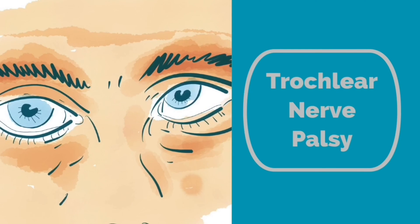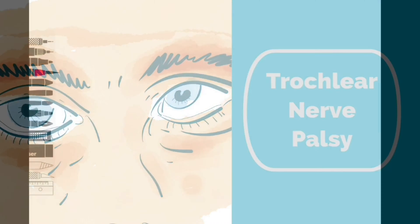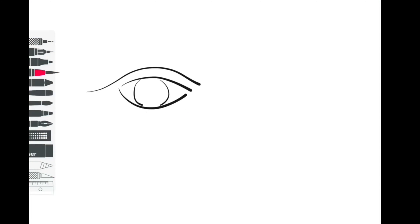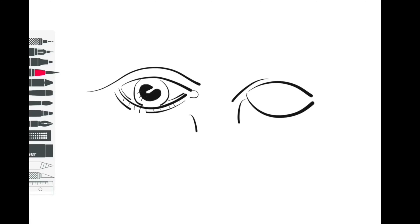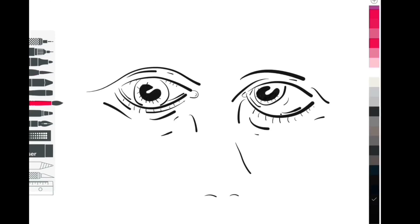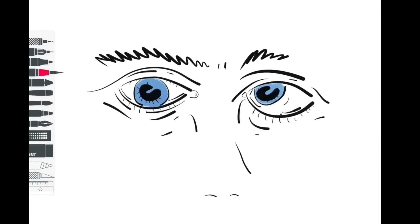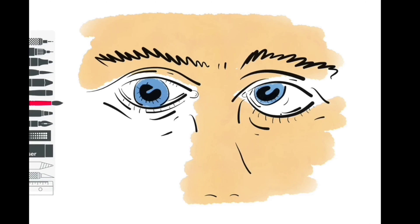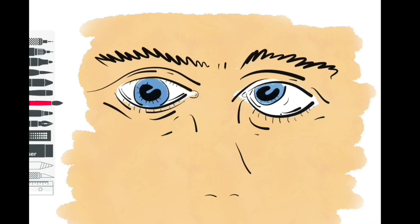The trochlear nerve is the fourth cranial nerve. It emerges from the posterior surface of the midbrain, the brainstem, and it crosses over centrally before it becomes a peripheral nerve. So it's a contralateral nerve that courses forward into the orbit and passes through the superior orbital fissure.